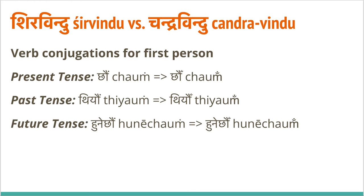There are also cases where chandrabindu is actually written as sirvindu. More recently there is a trend to write chandrabindu explicitly in all cases, but this is not always true. For example, verb conjugations for first person plural — 'we' — have this nasal sound at the ending: 'chong', 'khanchong'. In all my previous videos on present tense I have used sirvindu — the dot — to represent the chandrabindu. So it's 'chong'.